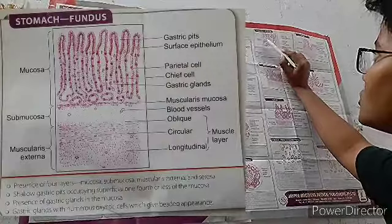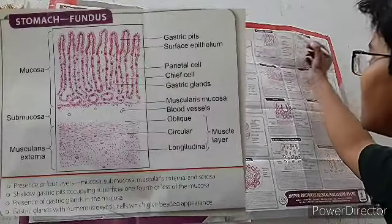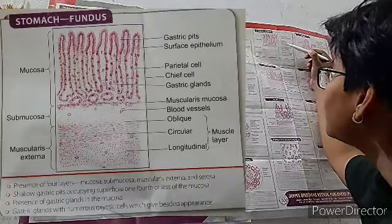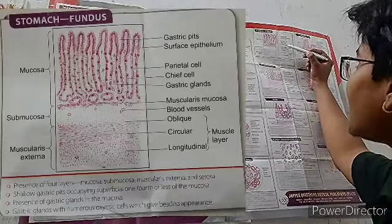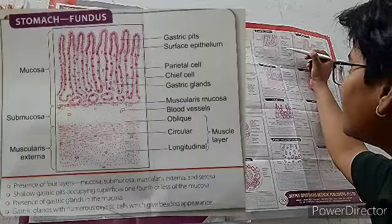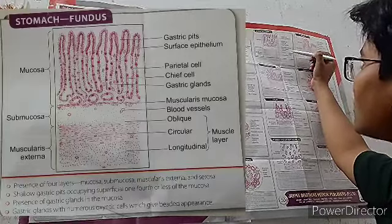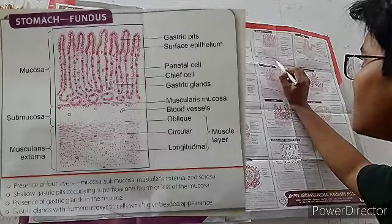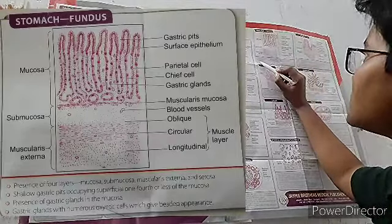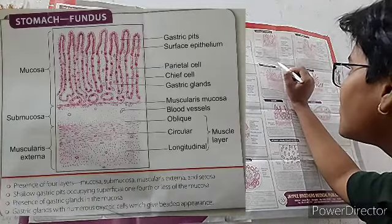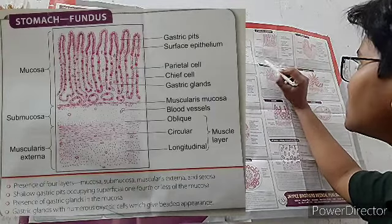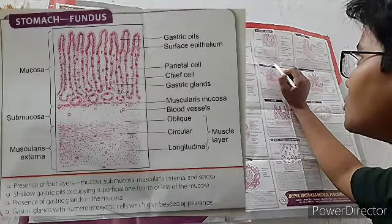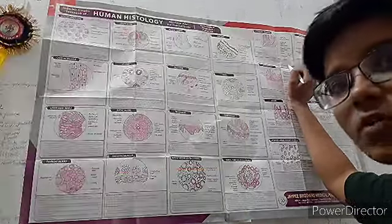Now the stomach, fundus. Visible structures include mucosa, submucosa, muscularis externa, gastric pits, surface epithelium, parietal cells, chief cells, gland cells, gastric glands, muscularis mucosae, blood vessels, and oblique, circular, and longitudinal muscle layers. The stomach has the full four layers: mucosa, submucosa, muscularis externa, and serosa. Shallow gastric pits occupy the surface — one-fourth or less of the mucosa. Gastric glands are present in the mucosa, and are numerous with oxyntic cells showing a beaded appearance.